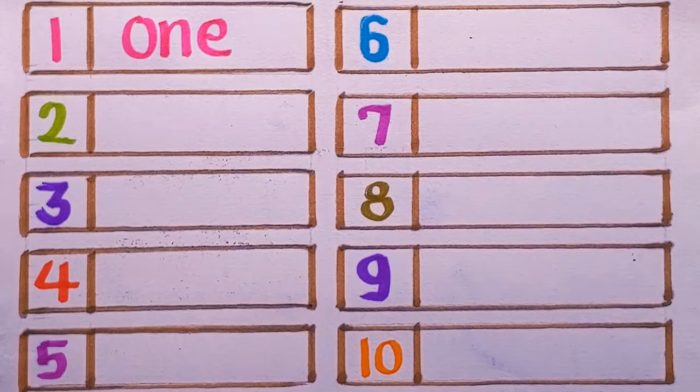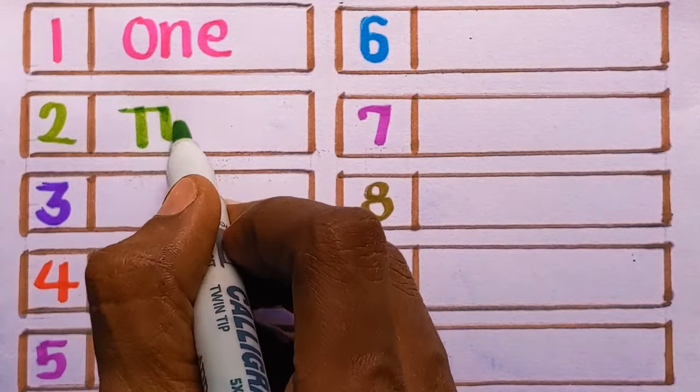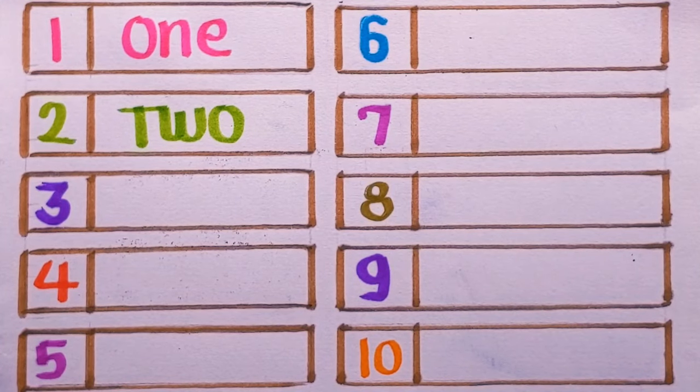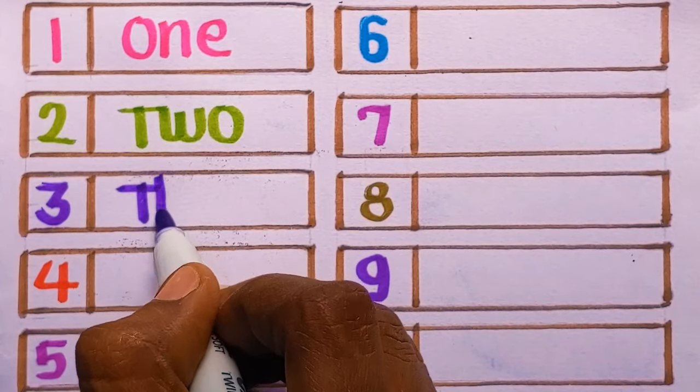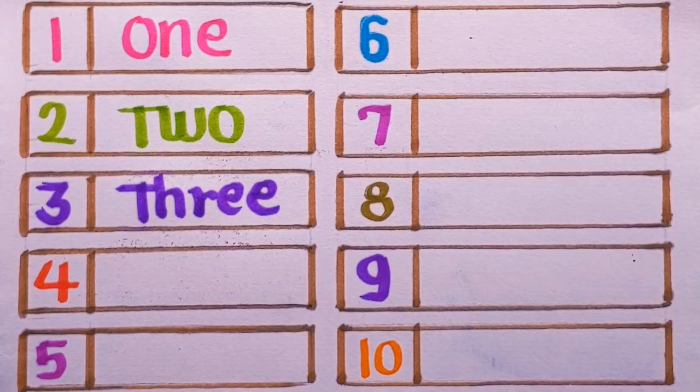Pink color. Number two: T-W-O, two, light green color. Number three: T-H-R-double E, three, violet color.